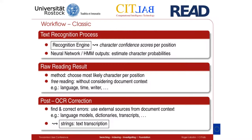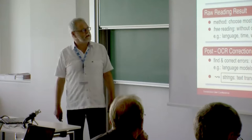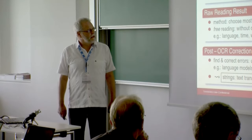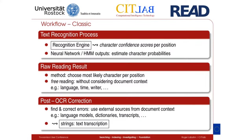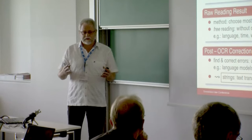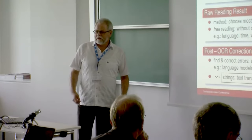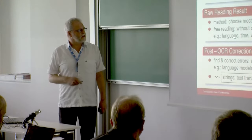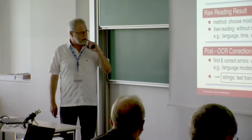From a technology foundation perspective, I start with the recognition engine as a black box. The engine produces a matrix of character confidences per position. These scores come from a neural network or a hidden Markov model output. We assume — but cannot prove mathematically — that these numbers estimate the probability of a character at a certain position. The most likely character per position gives you a string, which we call the raw or free reading result.